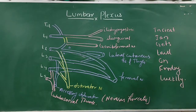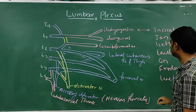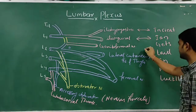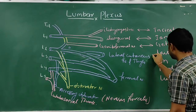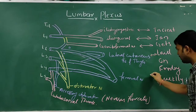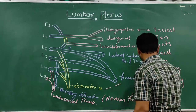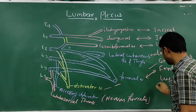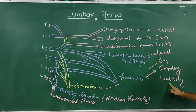'In' stands for iliohypogastric, 'ion' for ilioinguinal, 'gate' for genitofemoral, 'late' for lateral cutaneous nerve of thigh, 'on' for obturator, 'Friday' for femoral, and 'luckily' for lumbosacral trunk.